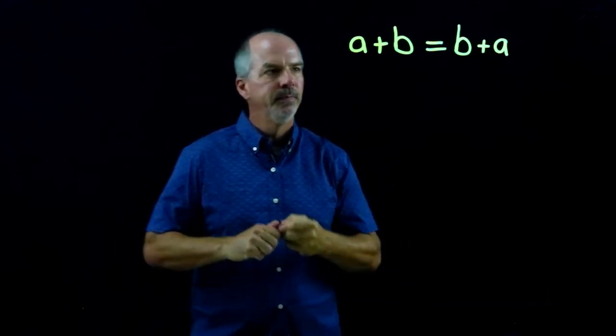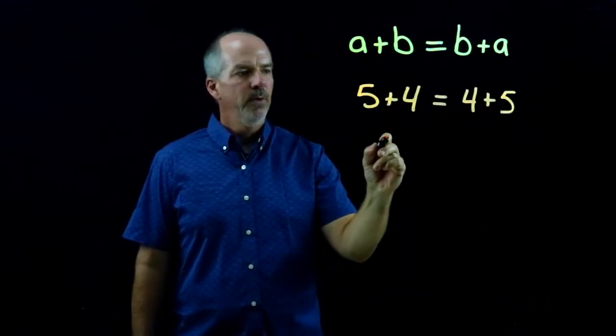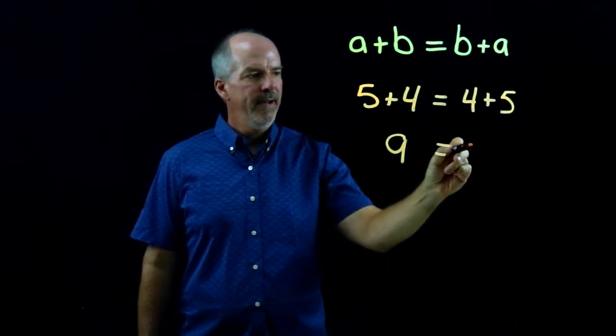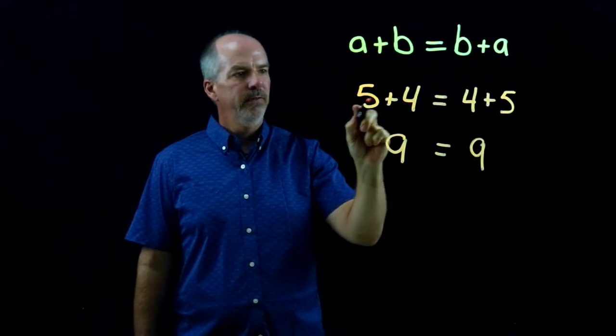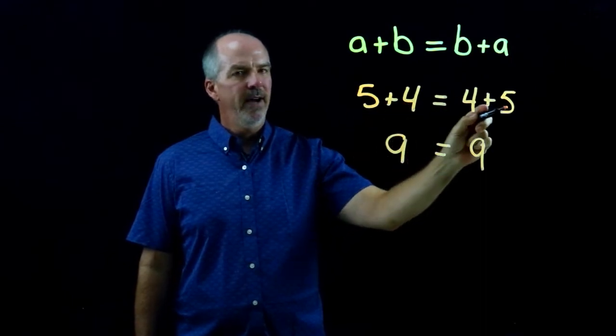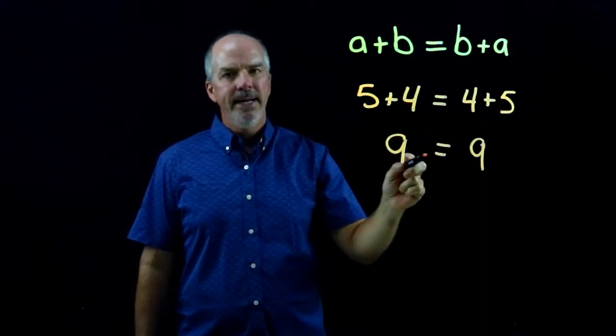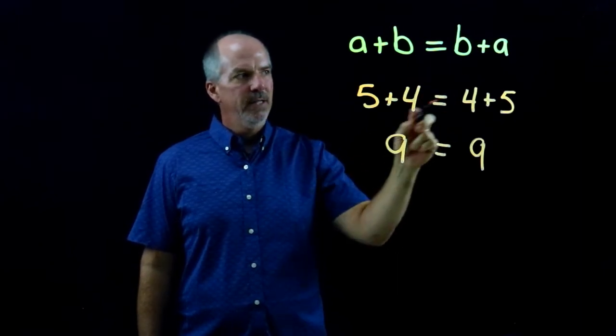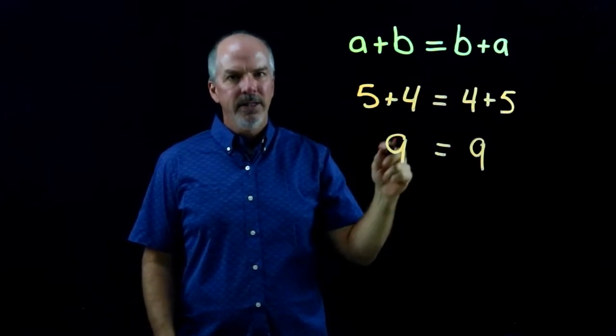Let's look at an example. 5 plus 4 is 9 and 4 plus 5 is 9. So we change the order of 5 and 4 to 4 and 5 and each time we got 9. So the commutative property for addition allows us to change the order in which we add without changing the sum.